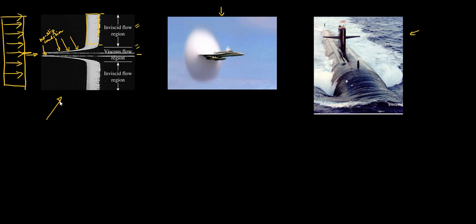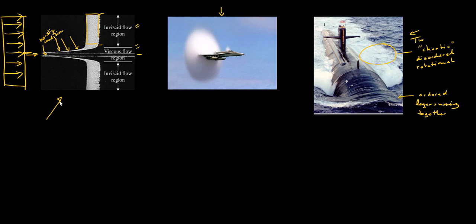The third image shows a submarine, providing a nice juxtaposition of laminar and turbulent flow. Upstream, the flow is fairly laminar and ordered — layers seem to be moving together. In the wake region, however, it is chaotic, disordered, and rotational, which we would classify as turbulent. These are all concepts that we will explore further in our study of fluid mechanics.